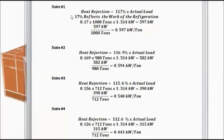So, we took the heat rejection. The total heat rejection is 117% of the actual load. It's the 17% of that, though, over the actual load is the work of the refrigeration, as I pointed out. And so, we can calculate this, convert it to kilowatts, and we get 597 kilowatts. And, of course, if we put that over the unit capacity, we get 0.597 kW per ton.